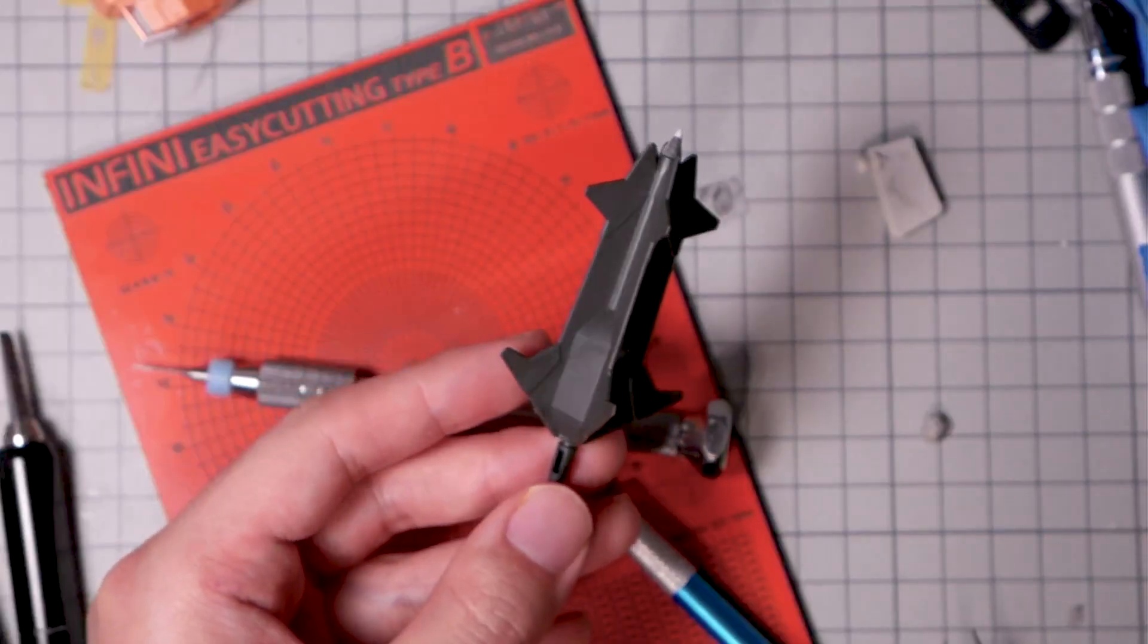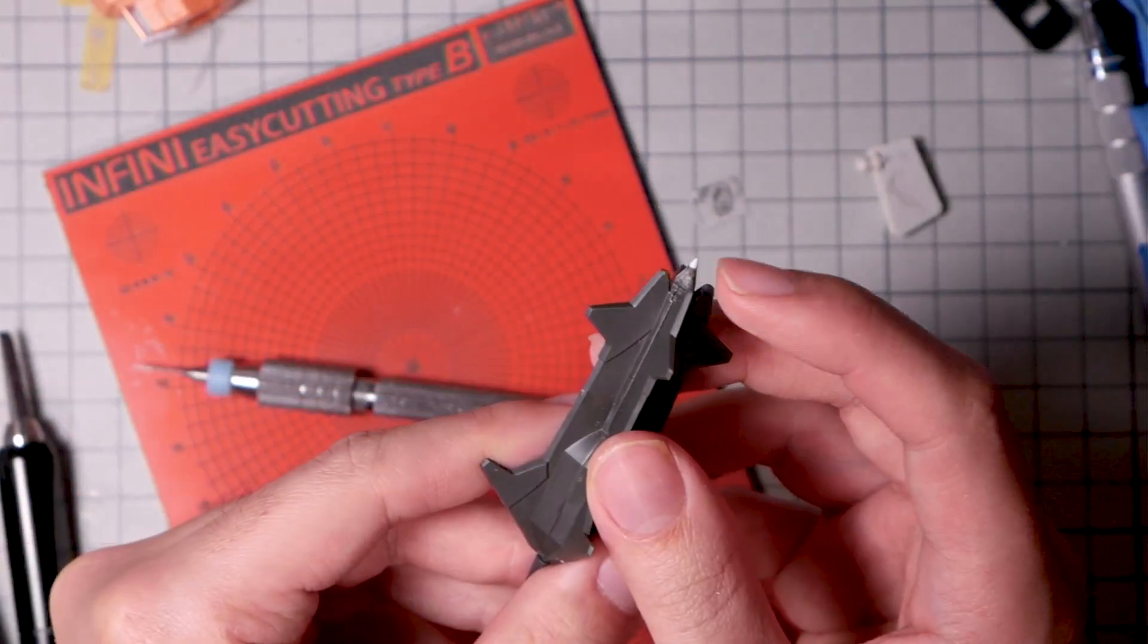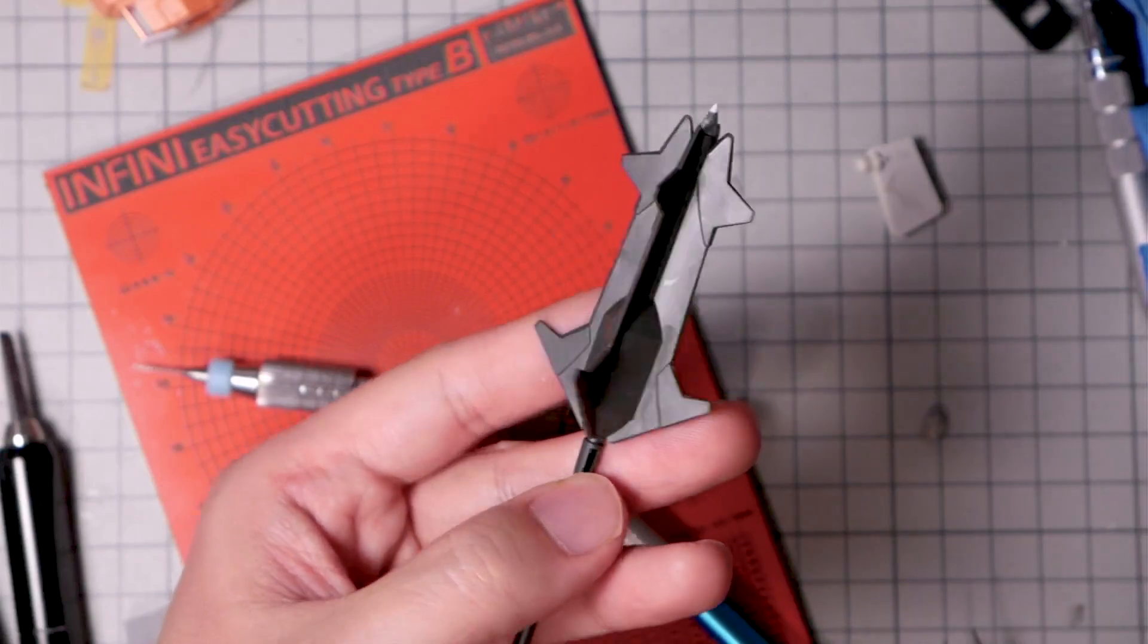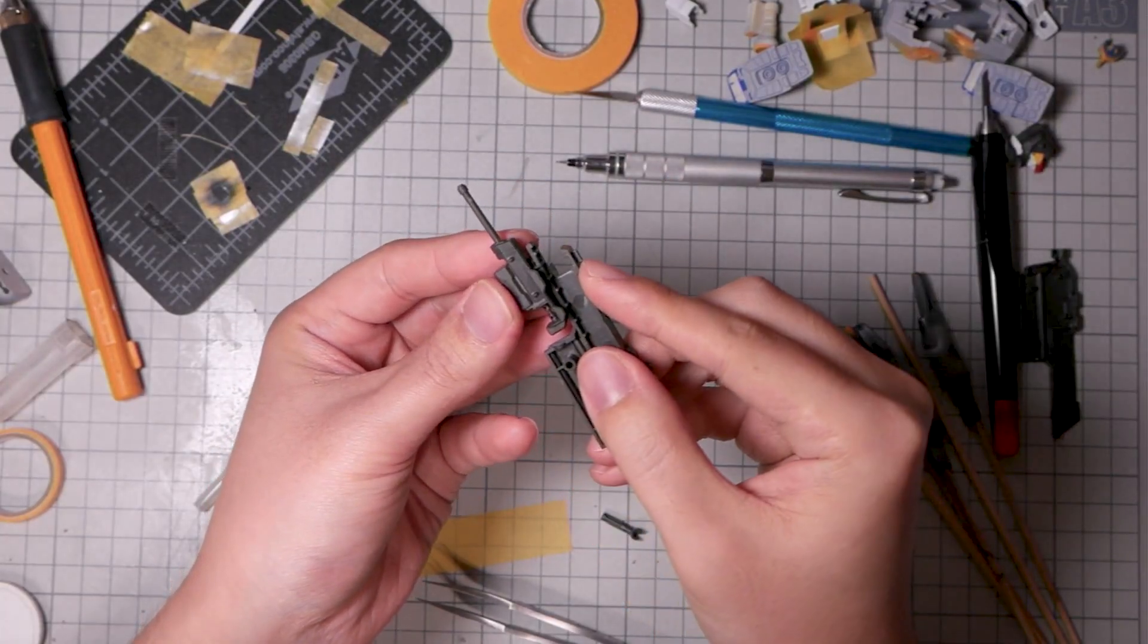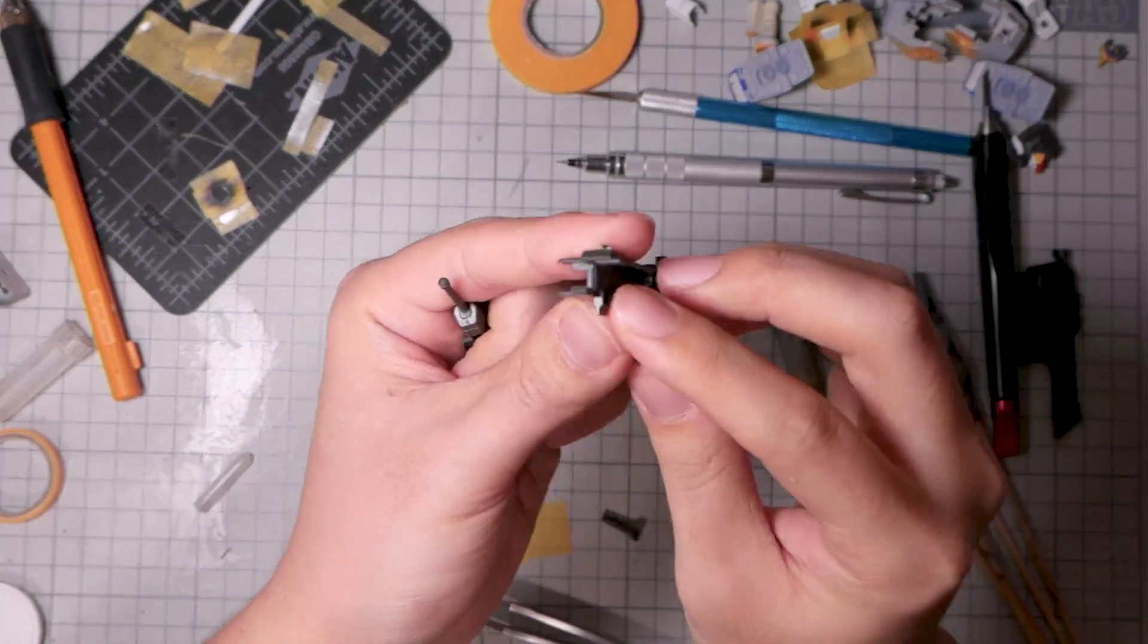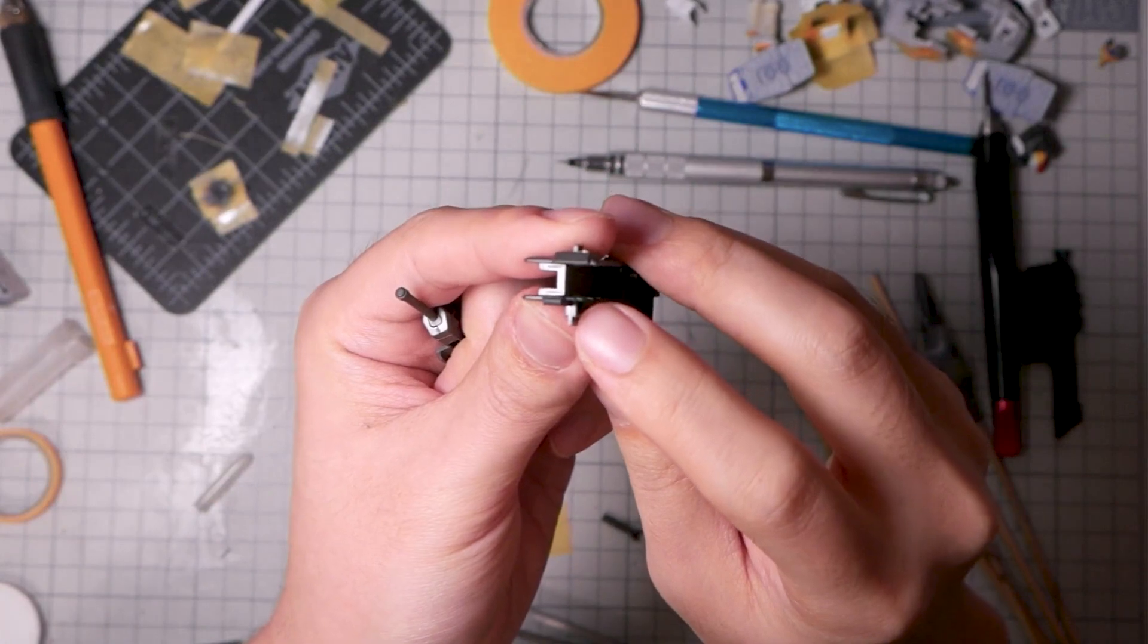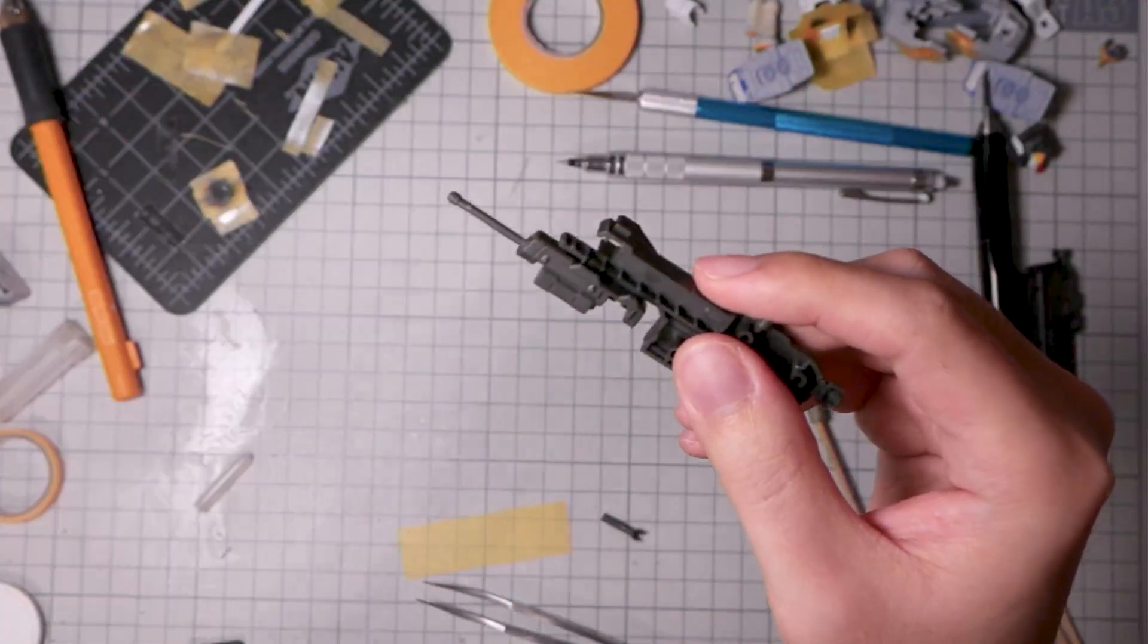The seam line on this weapon would be ridiculous to deal with, so I'm just going to skip out on that. I will sharpen the tip here though to drive your attention away. I also have this rail gun thing from the expansion pack. It has two interlocking parts, so I'm going to reduce the locking bit to make this a clip-on part instead for easier seam line removal.